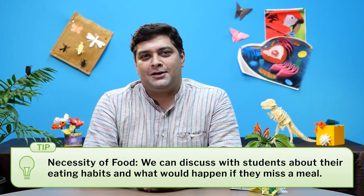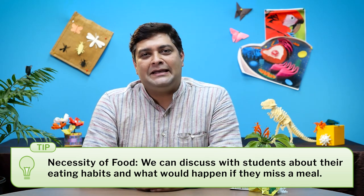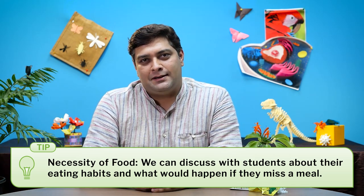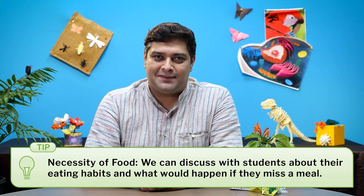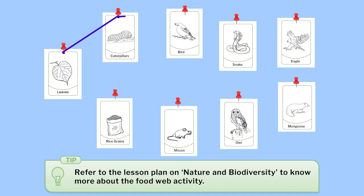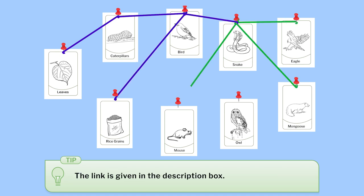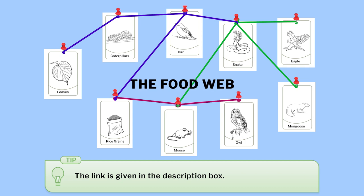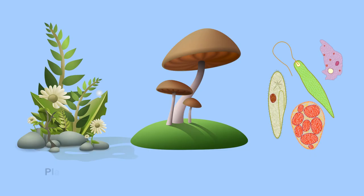For nutrition, we can discuss with students what their eating habits are and what would happen if they miss a meal. This creates a fun-filled discussion and helps engage students. Additionally, using a food web chart, we can discuss how animals find their food, their eating habits, and categories like herbivores and carnivores. We can then extend the discussion briefly to examples in specific groups like plants, fungi, and bacteria.